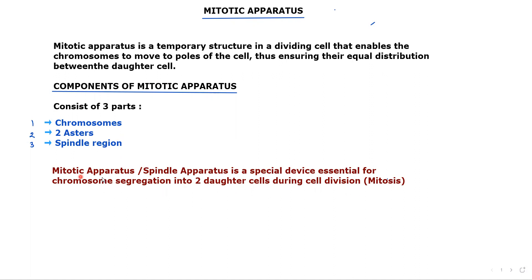Why is this called the mitotic apparatus? This structure is formed during the mitotic phase, at the end of prophase, so it is called the mitotic apparatus. And since the structure is spindle-shaped, it is also given the name spindle apparatus.